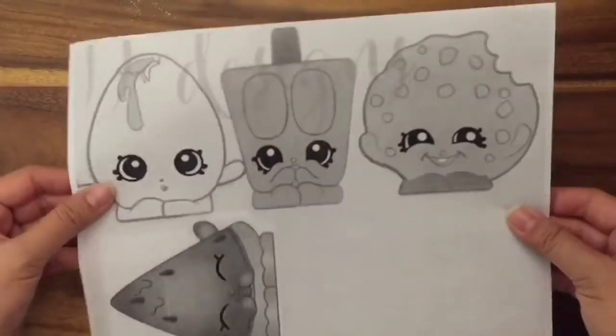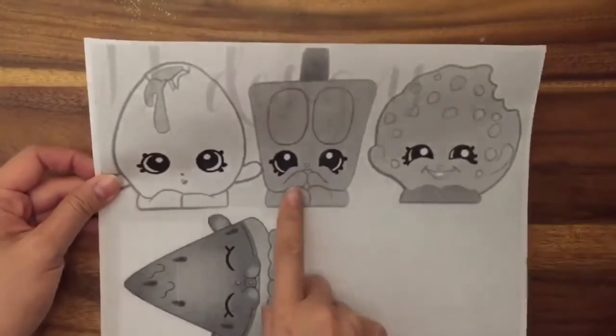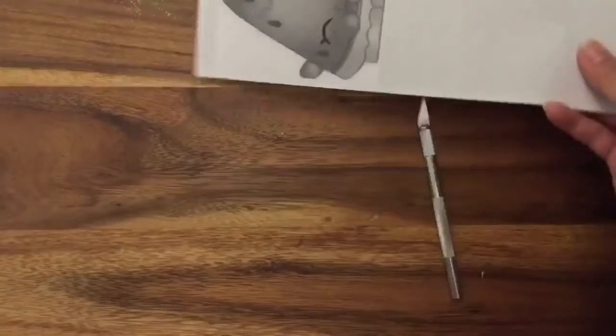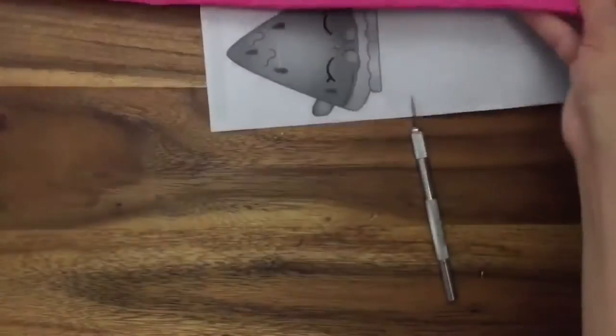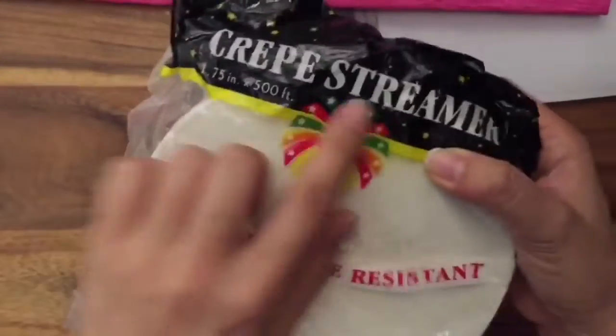So let's get started. For this tutorial, you will need a ruler, a craft knife or scissors, a printout of the Shopkins that you want to make the pinata for, so I'm going to make this popsicle one, crepe paper, and then it's actually easier if you have this type of crepe paper, but I only have like the big sheets, so I'm going to use a big sheet for you. It's crepe streamers.